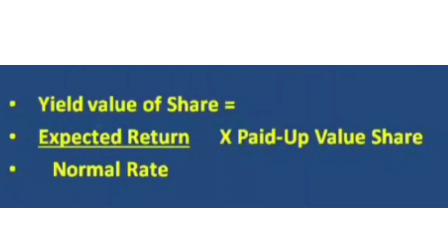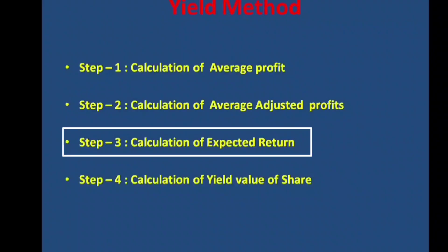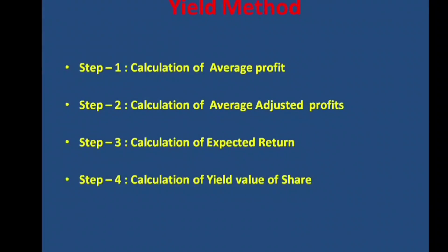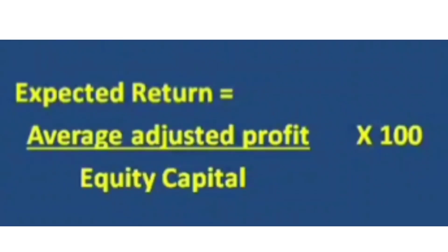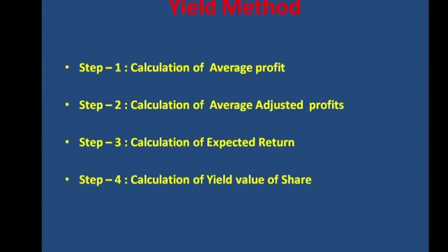For the yield value method, we need to calculate the expected return using the formula: expected return = average adjusted profit ÷ equity capital × 100. Then yield value of share = expected return ÷ normal rate × paid-up value per share. We proceed step by step.